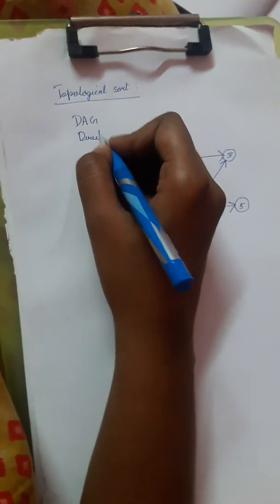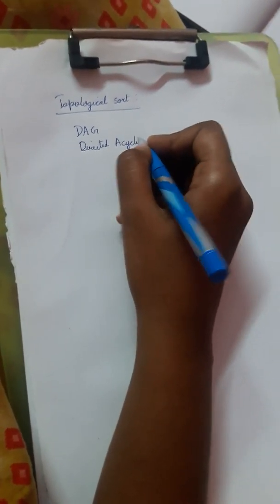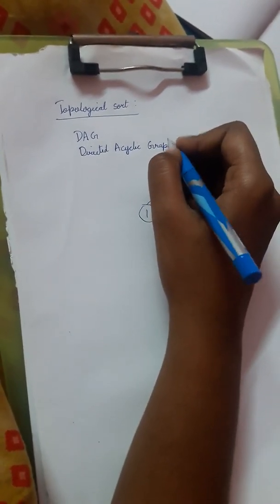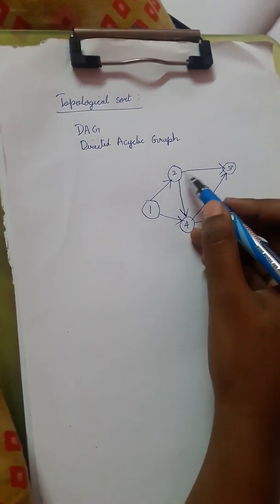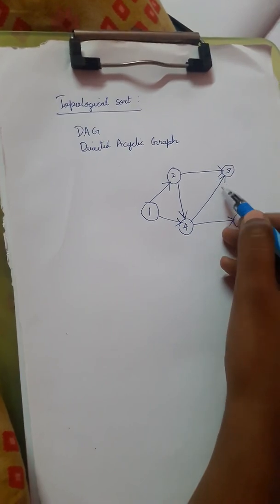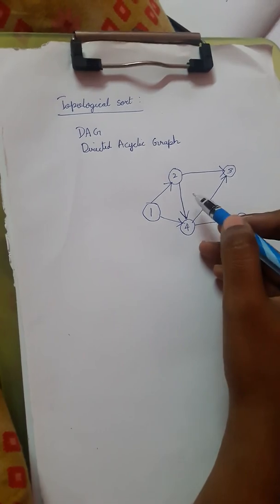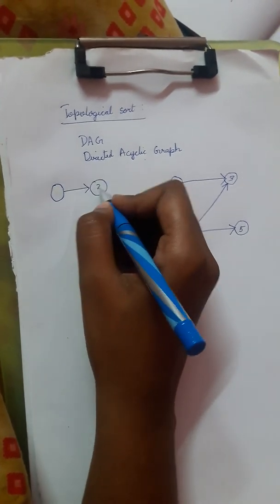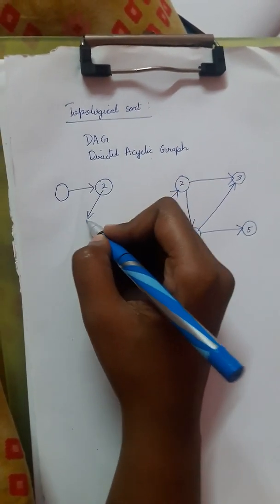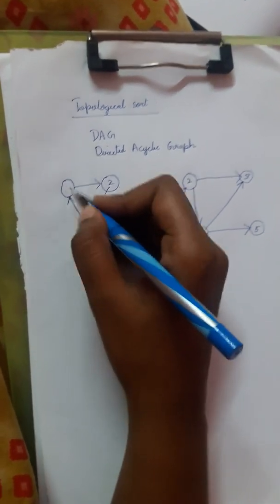A directed acyclic graph — 'directed' means the graph should have directions, arrow marks pointing between nodes. 'Acyclic' means it should not have a cycle. For example, consider nodes 1, 2, 3.